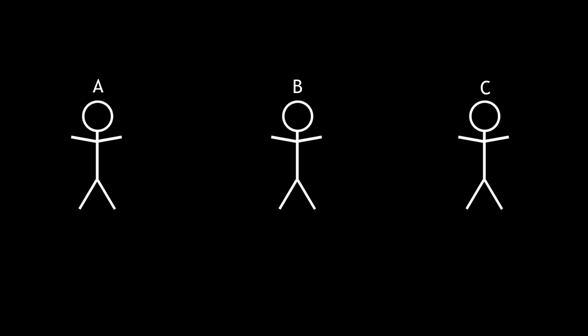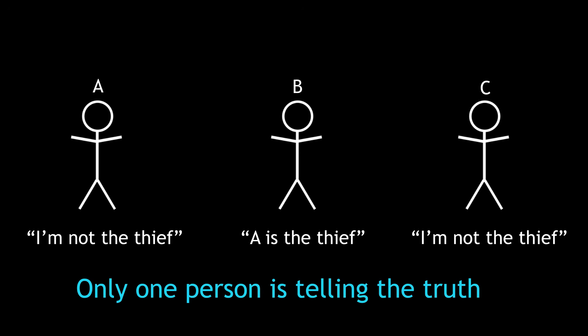Each of them have given a statement containing an accusation. A says I'm not the thief, B says A is the thief, and C says I'm not the thief. We also know that only one of them is telling the truth. Can we work out who the thief is?